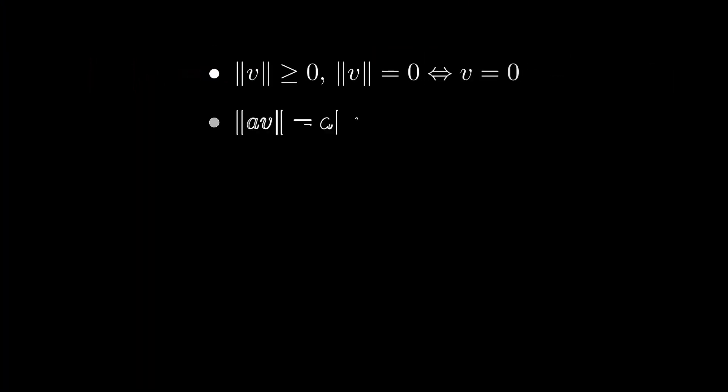First of all, they are always non-negative and zero if and only if x is zero. Additionally, you can pull the multiplication by a scalar out of the norm. So the norm of a scaled vector is the same as if you scale the norm by the absolute value of the scalar. This is called absolute homogeneity.